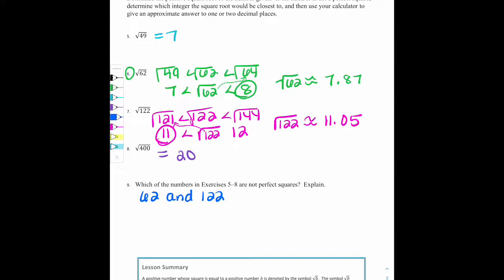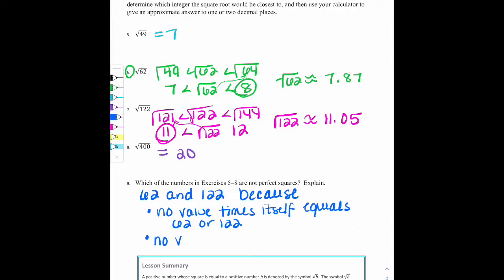So again, there's two reasons we can do. We'll say because, now option one, and the one I tend to use the most, is no value times itself equals 62 or 122. The other option would be to say no value of x satisfies the equation, or really equations, because there's more than one number, x squared equals 62 or x squared equals 122.